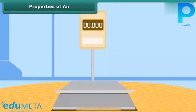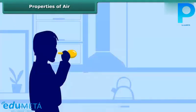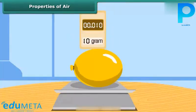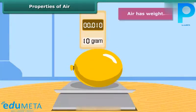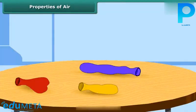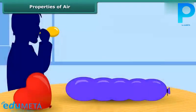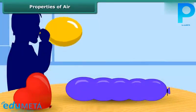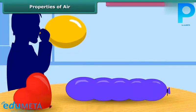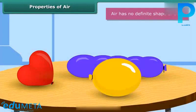Now take a balloon and weigh it. Blow air into it and seal its mouth. Now weigh the balloon again. Is there a difference in the two weights? This activity proves that air has weight. Take three balloons of different shapes and sizes and blow air into all three. The air-filled balloons appear different because they originally had different shapes and sizes. Air has no definite shape or size — it occupies the shape of its container.